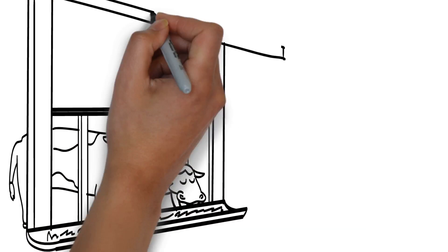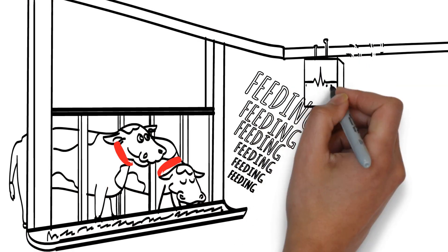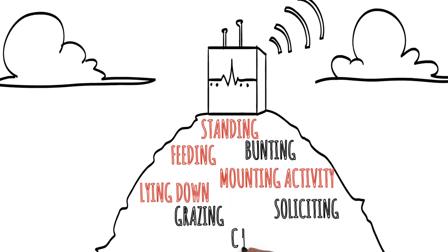Herd Insights works just as well indoors as outdoors. A gateway receives the gesture recognition data from the cows and sends it to the Herd Insights analytical engine on the cloud via the internet.